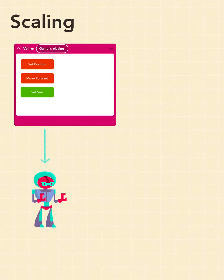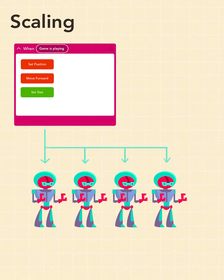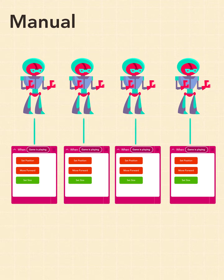The idea of scaling means that you can write code for one case or for one object and have it applied to many other objects or contexts with minimal extra work. This is more efficient than writing code manually for each new object or context.